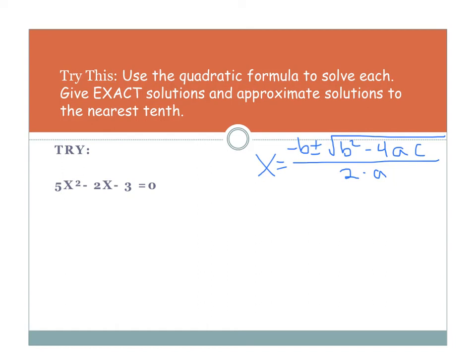Now, let's try this next one here. Once again, we're going to give exact solutions and approximate solutions, so we should have 4 in the end.